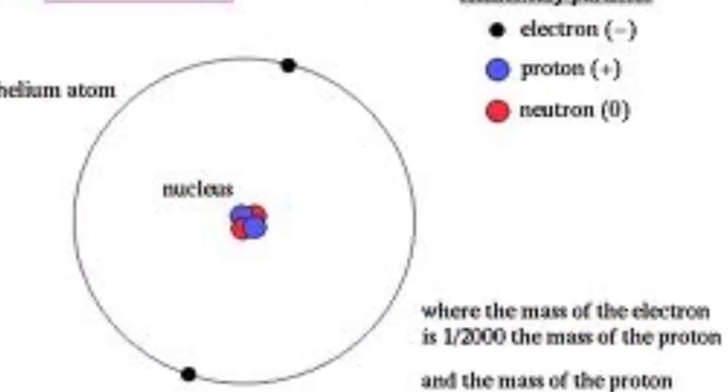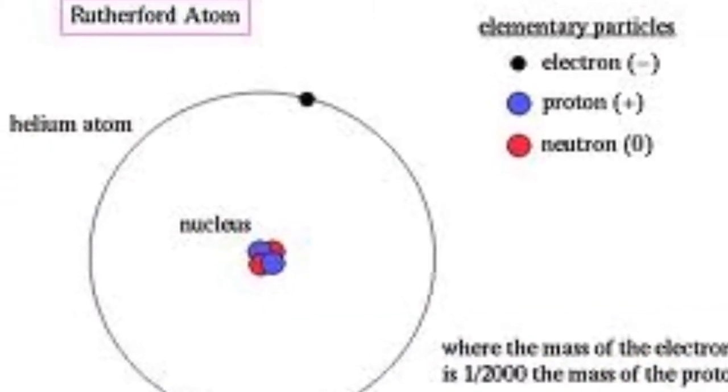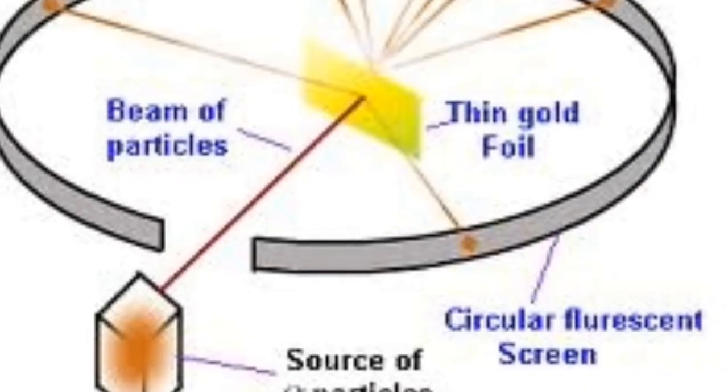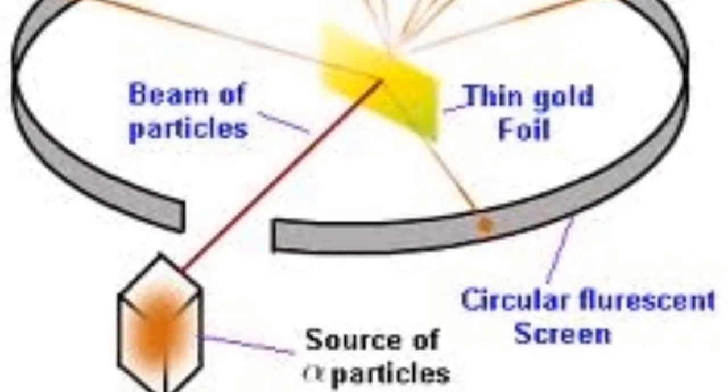When he used this foil, the scatter was less, causing the beam to not be a mess. This is from gold being flexible, making this experiment much more acceptable.